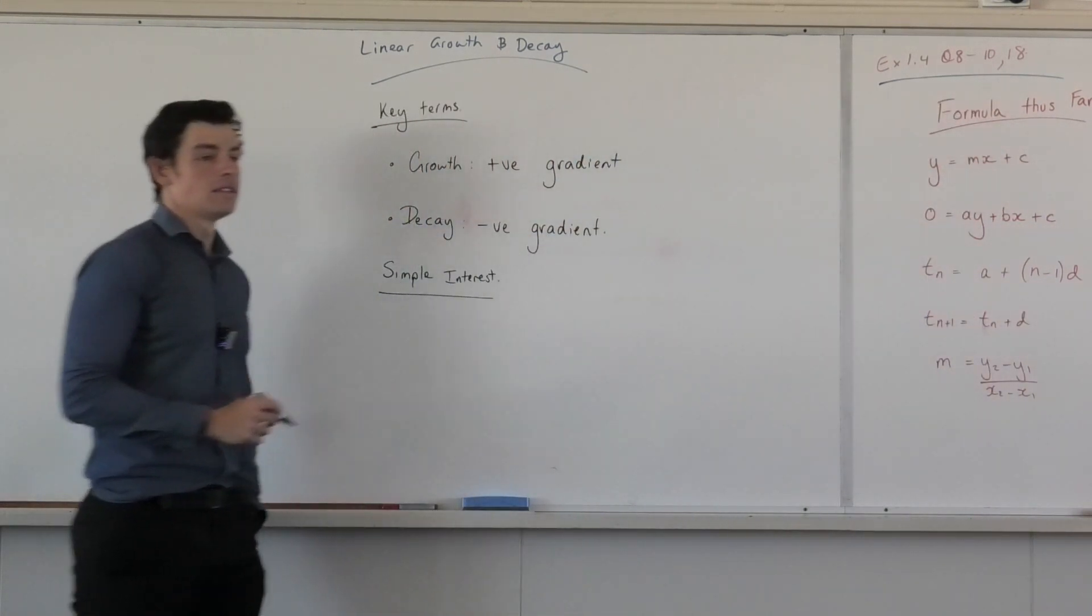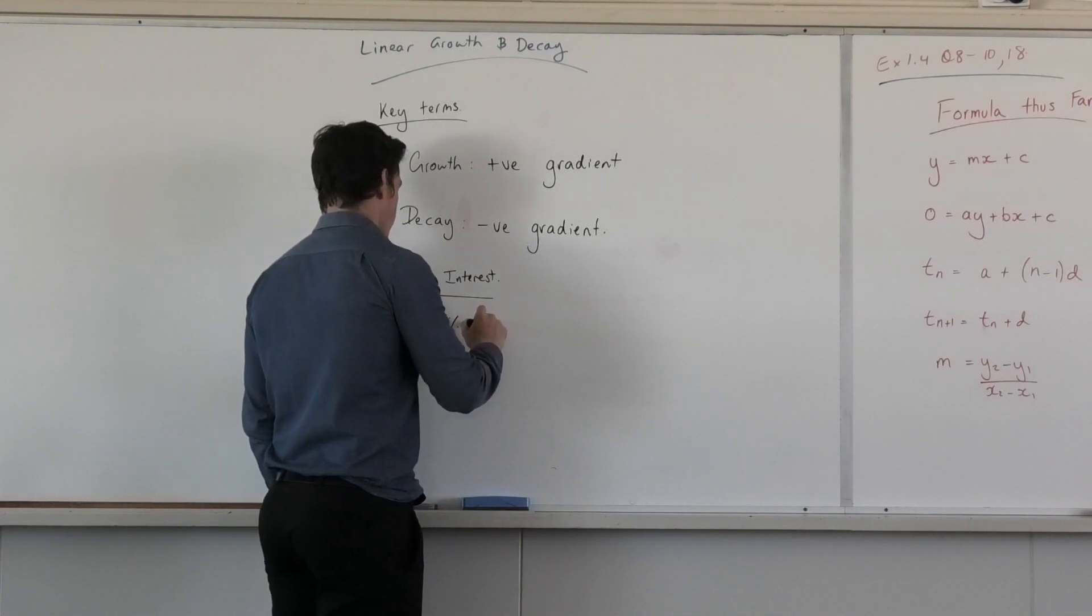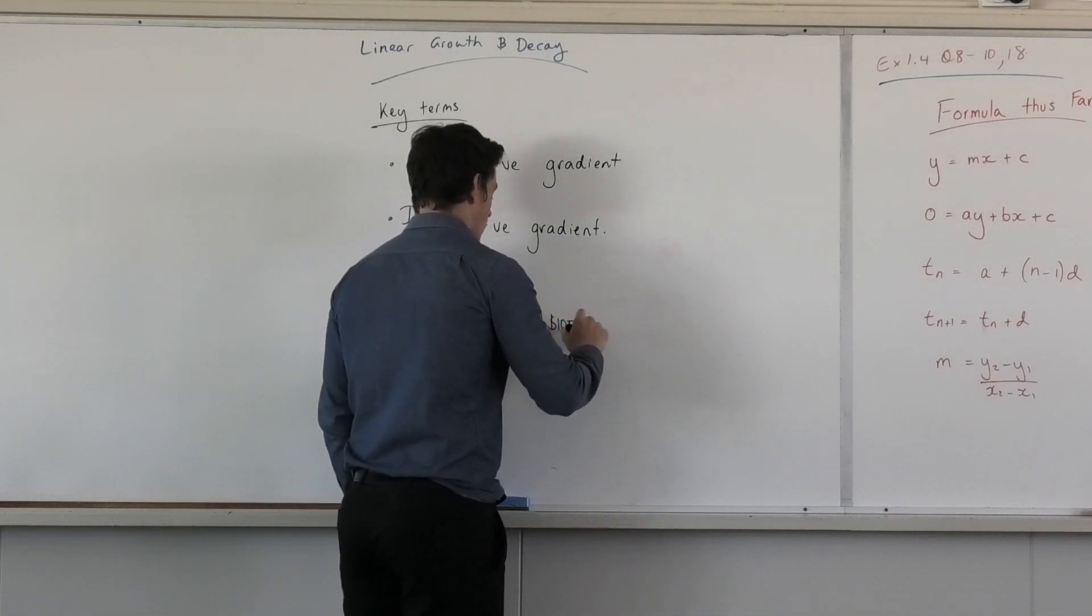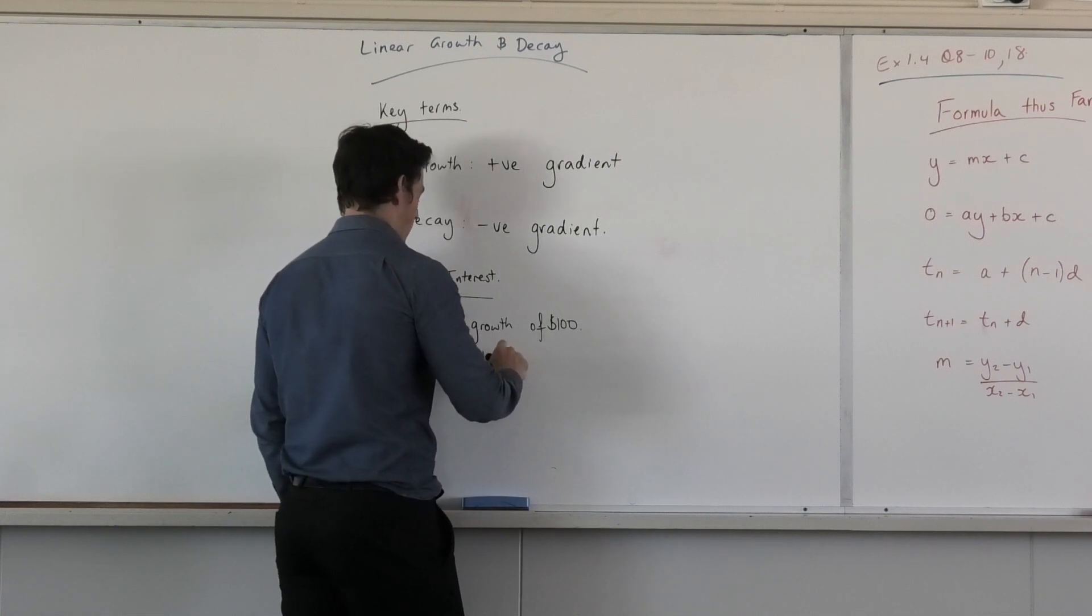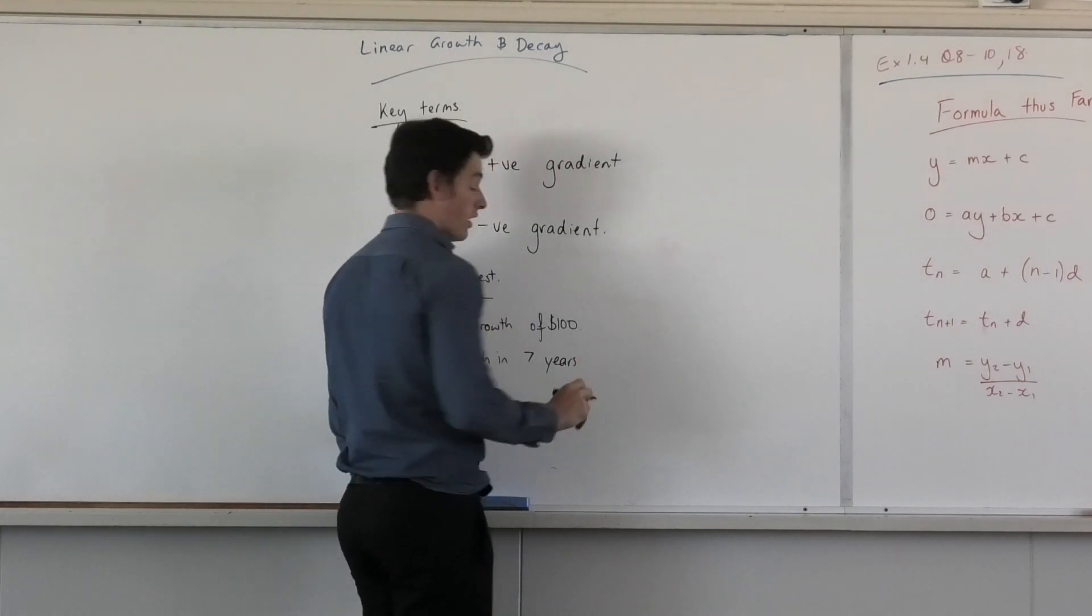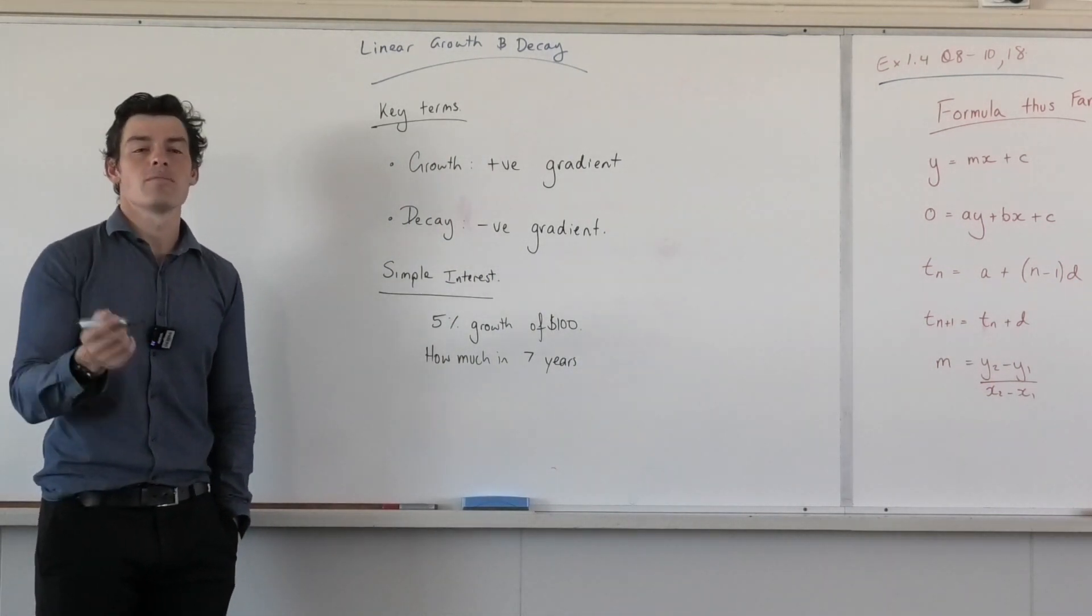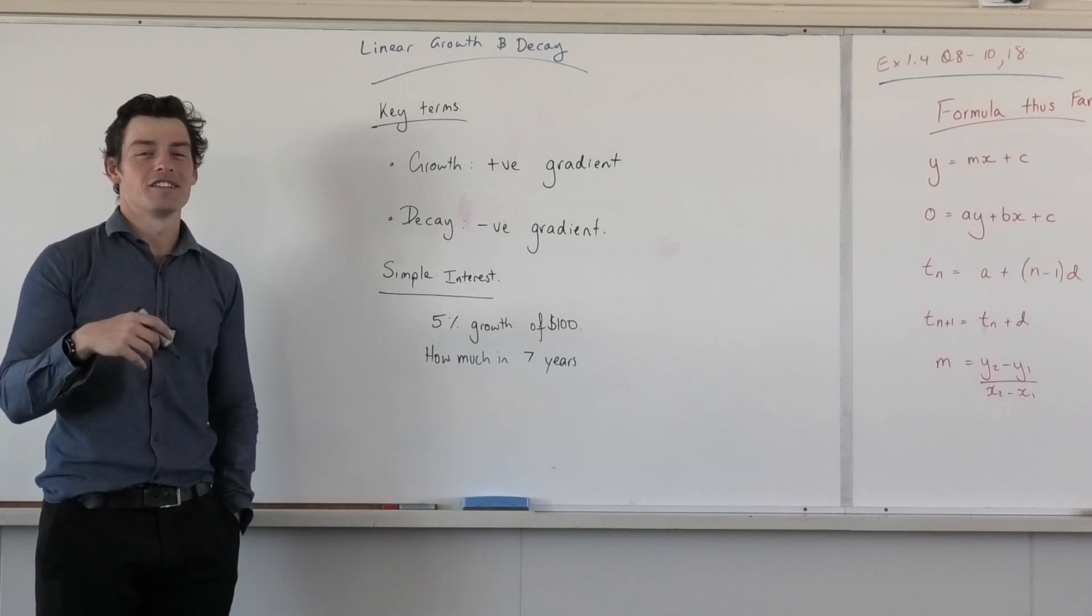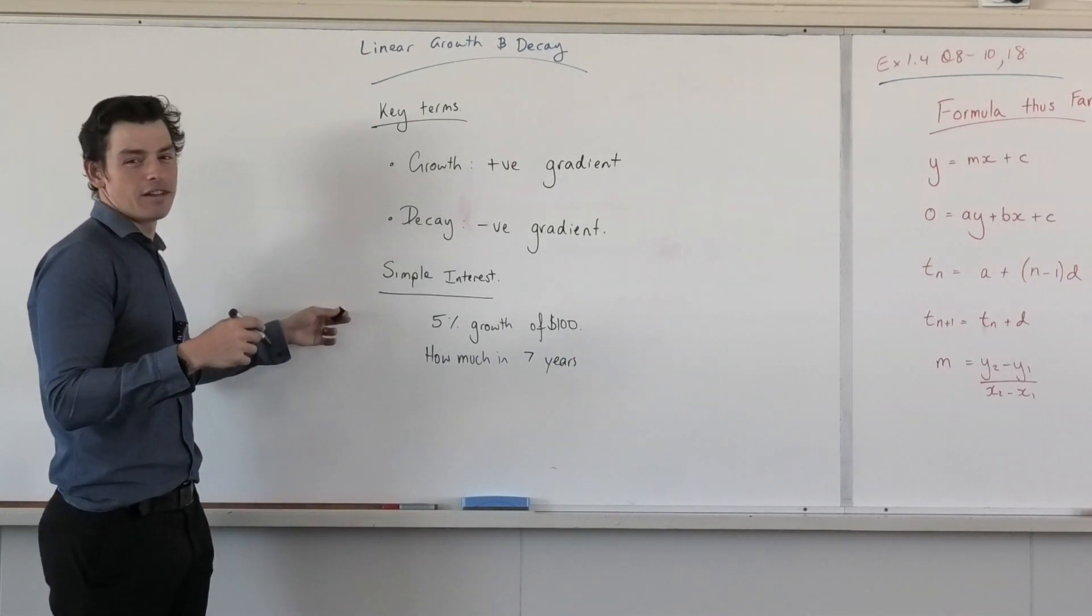What does a percentage, so if I have 5% growth of $100, how much in 10 years? Is it annually or monthly? What did you say? Is it annually, monthly, weekly, daily? How often is it reduced by 5%? I'm looking for a word that you're missing. Compounding. How often is it compounding?